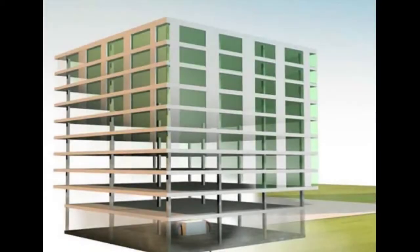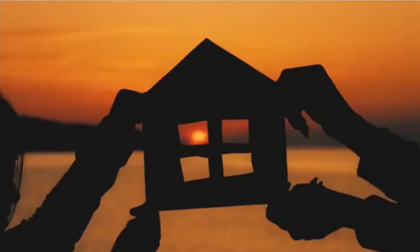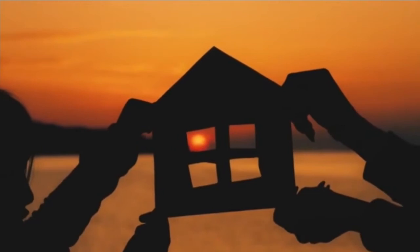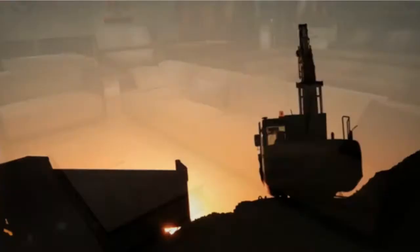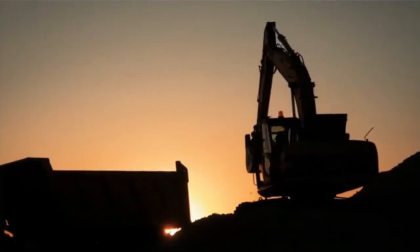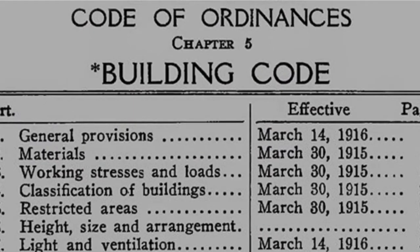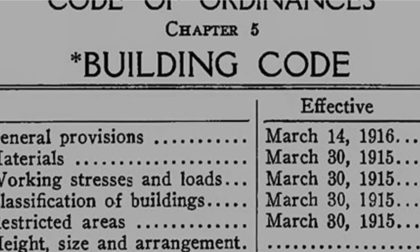Dead loads are always present throughout the lifetime of a structure, compared to live loads, which can come and go. Live loads are harder to predict than dead loads because it is a bit challenging to predict exactly how many people will be using a space at a given time, or how they will lay out furniture and store materials in a given space. When it comes to live load, we use code to figure out the magnitude of load, and depending on the country you live in, the code is going to change.